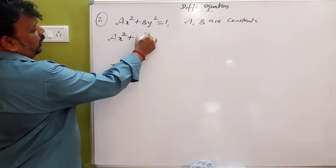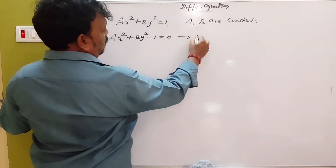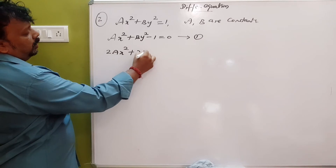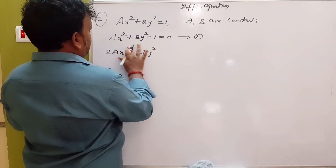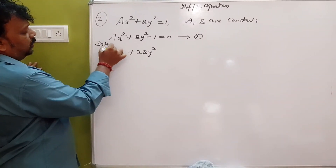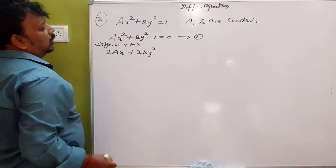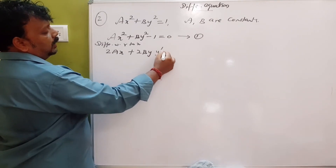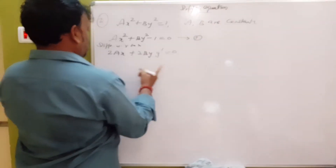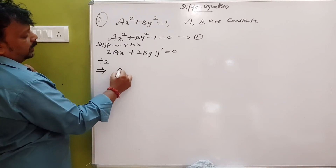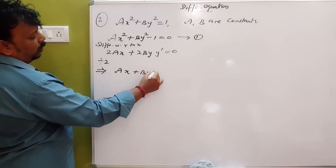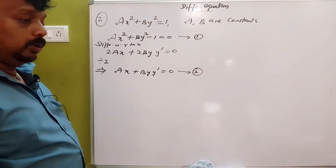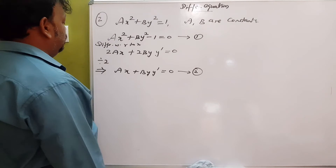So what are we going to do? First, to do it: 2A x squared plus 2B y squared. We need to differentiate with respect to x. 2x squared is 2By times y-prime, constant 0. So: 2 by 2 gives Ax plus By-prime times y-prime equals 0. This is equation number 2.